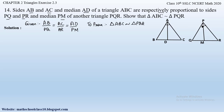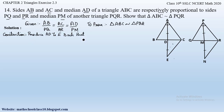To prove angle A equals angle P, a construction is needed. Construction: produce AD to E such that AD = DE, then join CE. Similarly, produce PM to N such that PM = MN, then join RN.